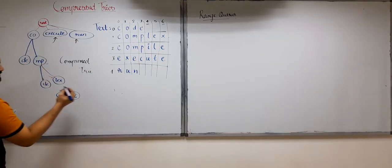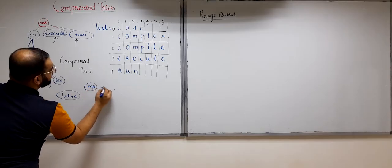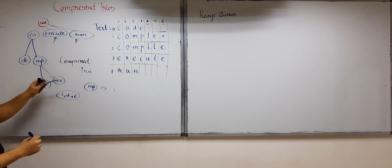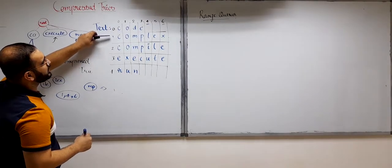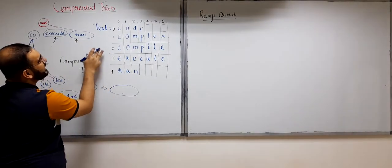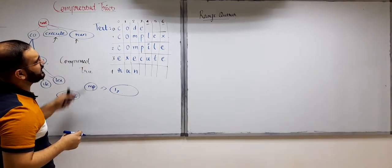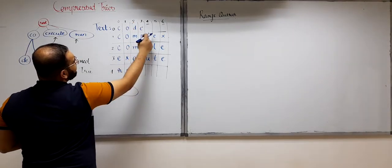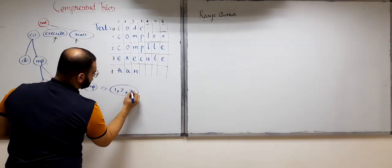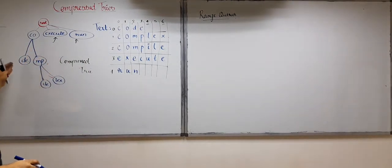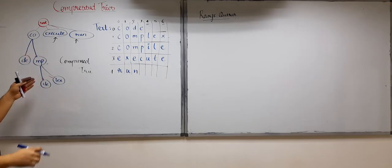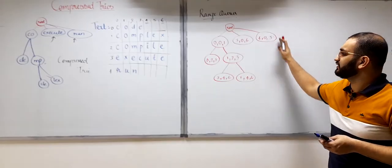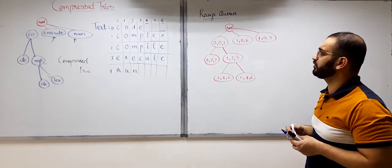For MP, it appears in both 'compile' and 'complex', so we can use index 1. The starting index of MP in 'complex' is 2 and the ending index is 3, so MP is represented as 1, 2, 3. In this way, every node in the compressed try is represented using just three numbers, making each label constant size.